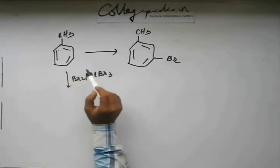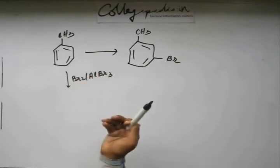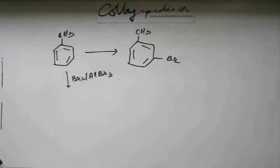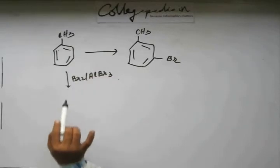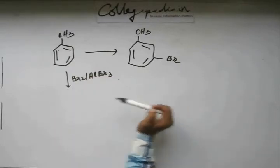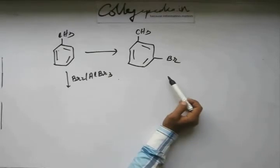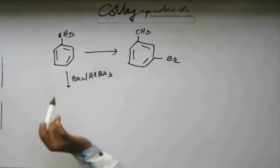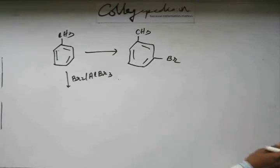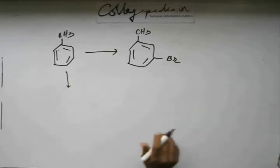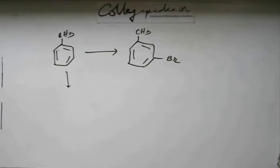Electron-releasing groups direct the incoming electrophile to ortho and para; electron-withdrawing groups direct it to meta. Methyl is an electron-releasing group, so it directs the incoming brominium ion to ortho and para — but we want it at meta. So direct bromination will not do the job, and we have to think of something else. This is a challenging problem and you should take up the challenge and work it out on your own.